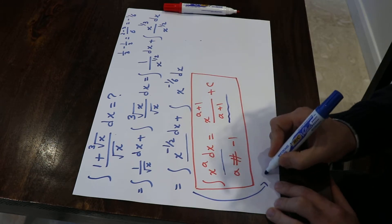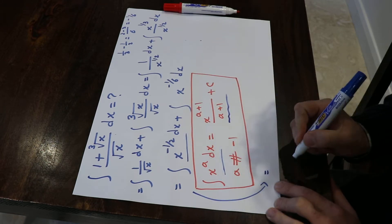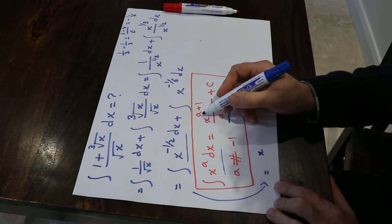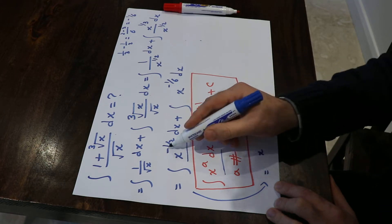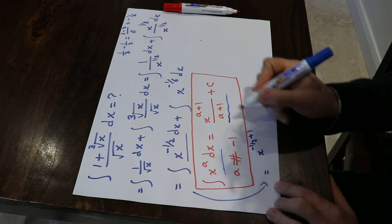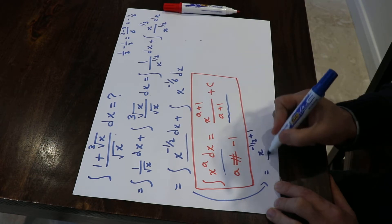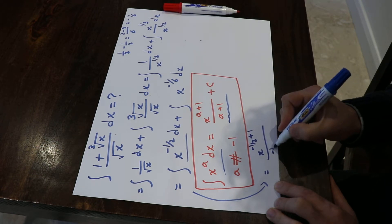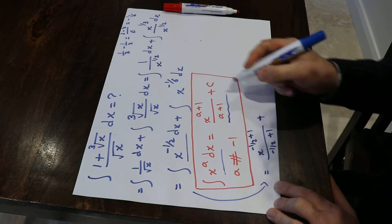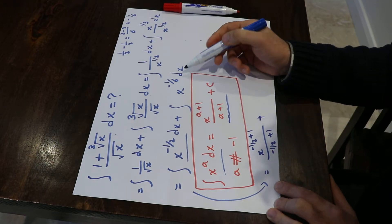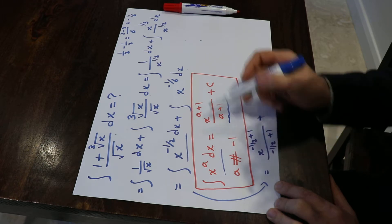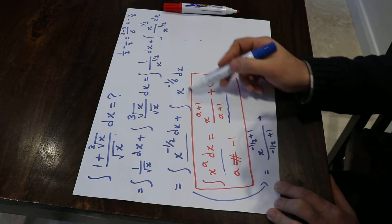Therefore, this integral will be equal to x to the power of minus 1/2 plus 1, divided by minus 1/2 plus 1, plus the second integral. If you compare this one with the formula, you see they have a similar format.